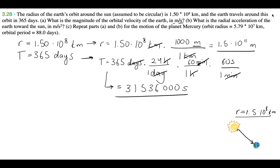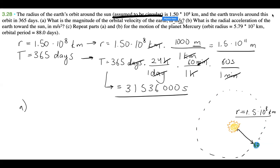So we have our period and our radius in seconds and meters respectively. Now for the analysis. If we want to find the orbital velocity of the Earth in meters per second, instead of just showing you the formula, let's think about it. If we have this orbital velocity around the Sun, and we know the orbit is assumed to be circular according to the question...